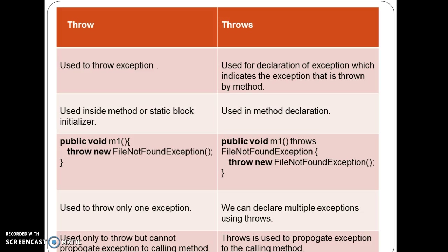The fifth difference: throw is used only to throw an exception but cannot propagate the exception to the caller method, whereas throws is used to propagate the exception to the calling method.